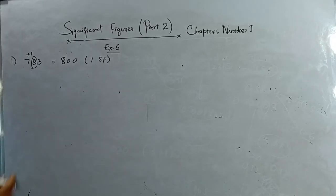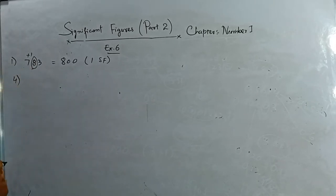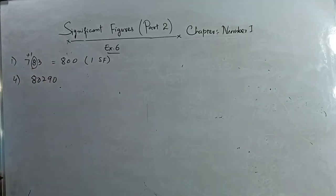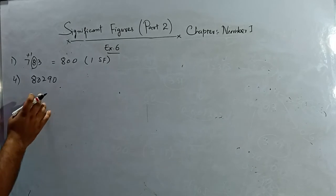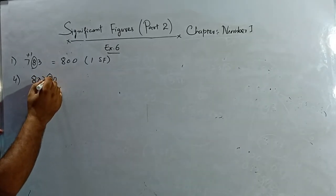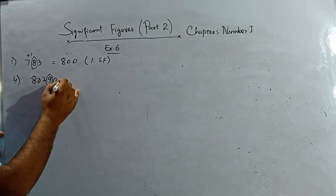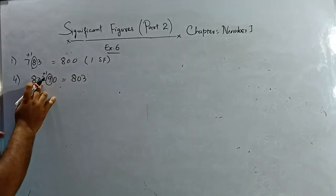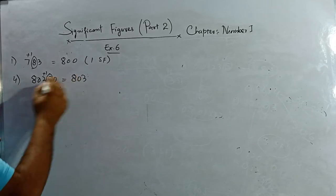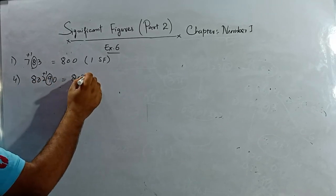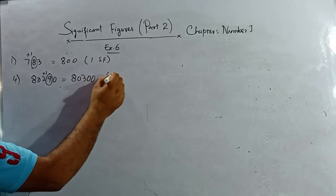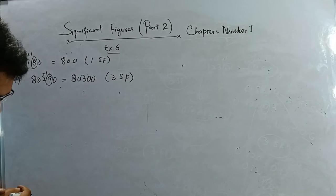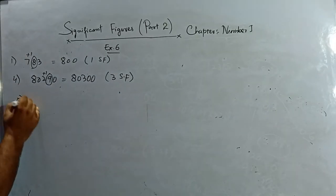Question number 4: 80290, write corrected to three significant figures. I check the third one — yes, it is greater than one, so I add one. The answer is 80300, three significant figures.